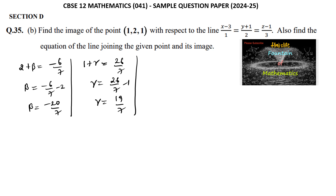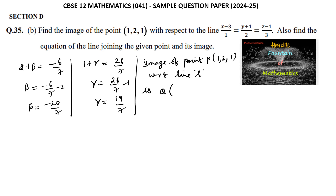So we have found the image of point P (1, 2, 1) with respect to the line L. The image point Q is (39/7, −20/7, 19/7).